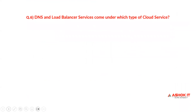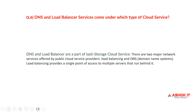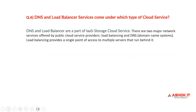DNS and load balancer services come under which type of cloud service? DNS and load balancer are part of IaaS, that is infrastructure as a service. There are two major network services offered by private cloud service providers: load balancing and DNS. DNS stands for domain name system. Load balancing provides a single point of access to multiple servers that run behind it.